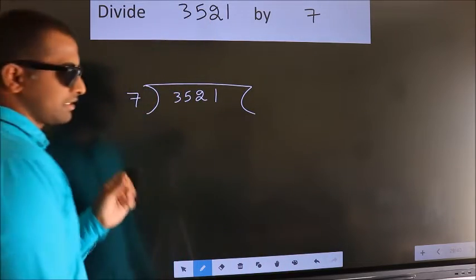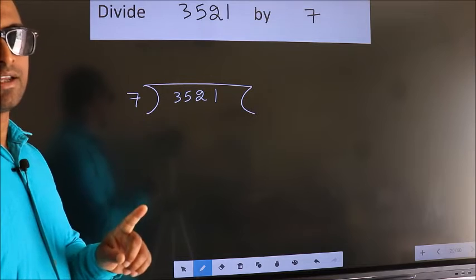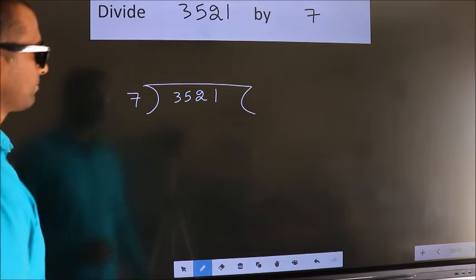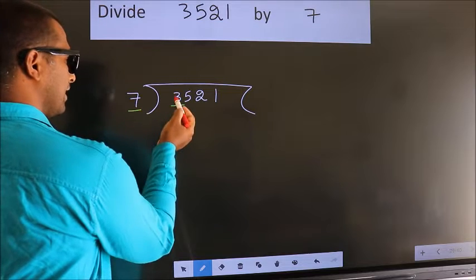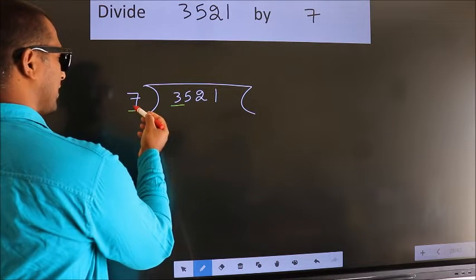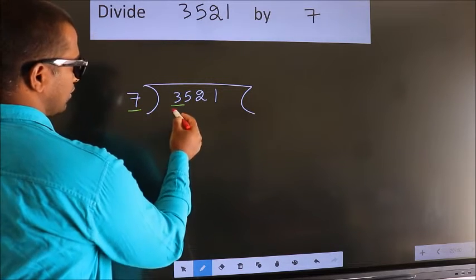This is your step 1. Next, here we have 3, here 7. 3 smaller than 7. So, we should take 2 numbers, 35.